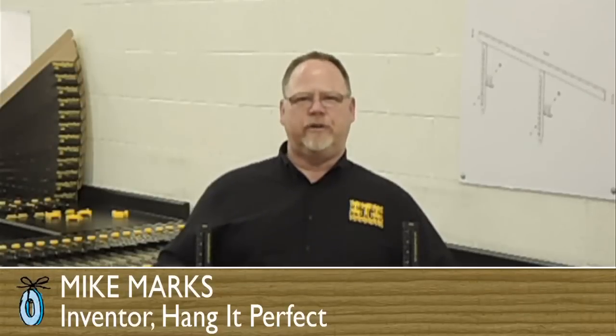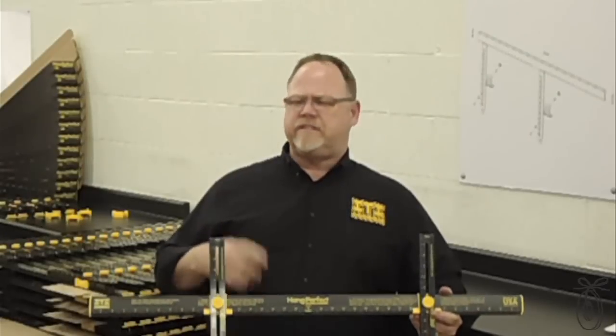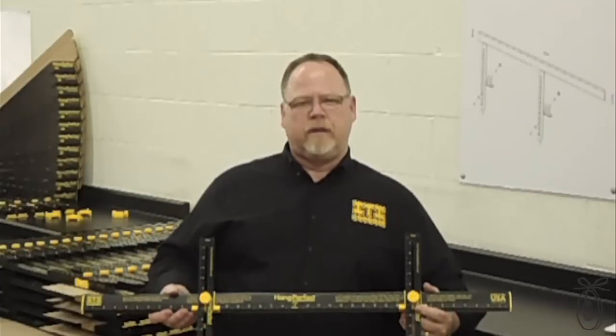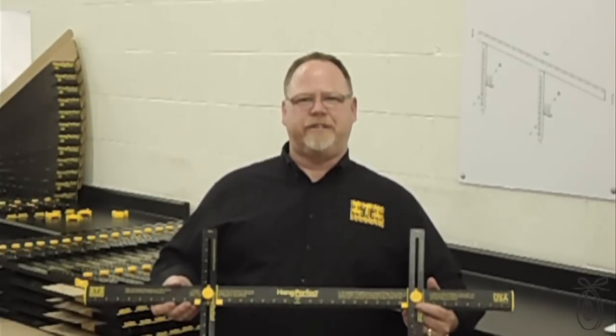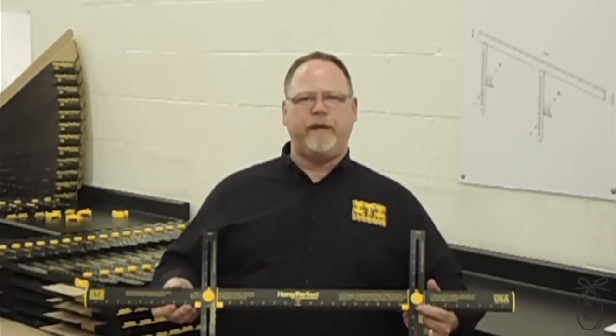About four and a half years ago I was hanging pictures with my wife and of course I was doing it like everybody else. Bringing out the levels, the tape measures, the pencils, and of course this one happened to be with a ladder. Well after about 35 minutes of struggling I finally hung the picture and it ended up crooked. I said there has got to be an easier way to do this.